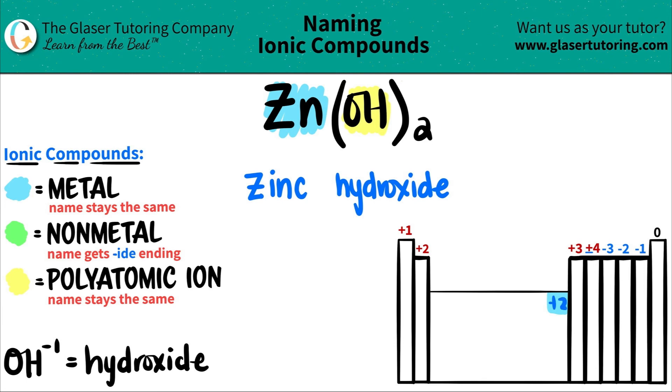So it doesn't transition really from one charge to another. So zinc does not need a Roman numeral. So we are done in this case. So Zn(OH)2 is just zinc hydroxide. You do not need a Roman numeral because we know the charge of zinc, always a plus two.